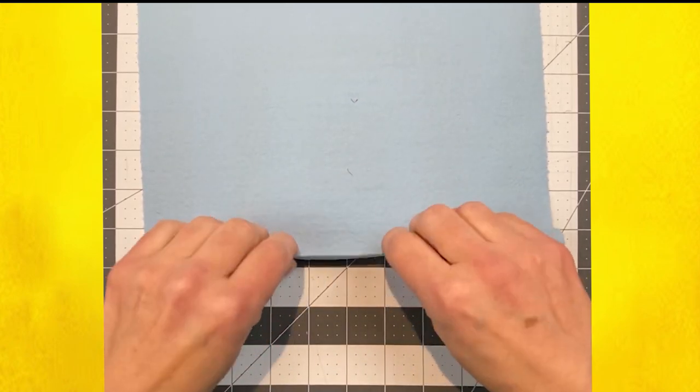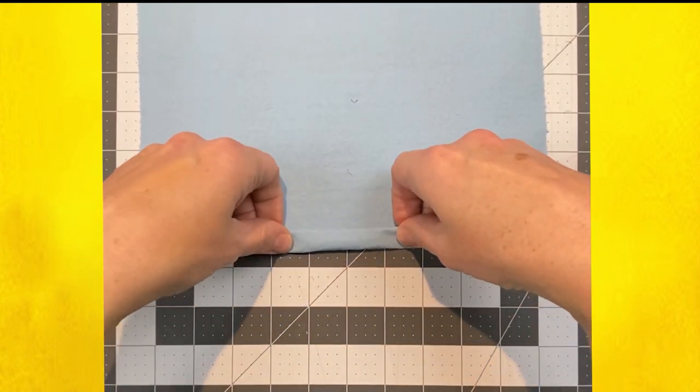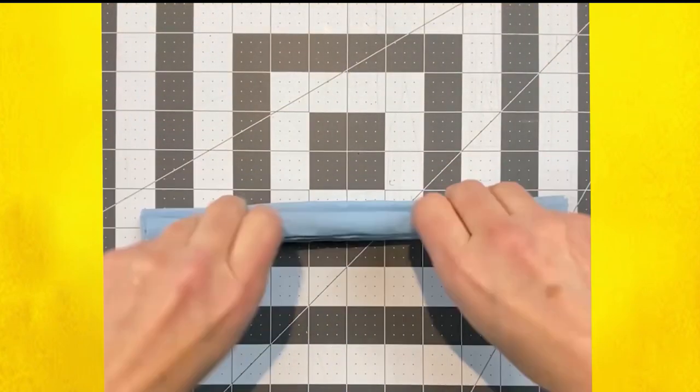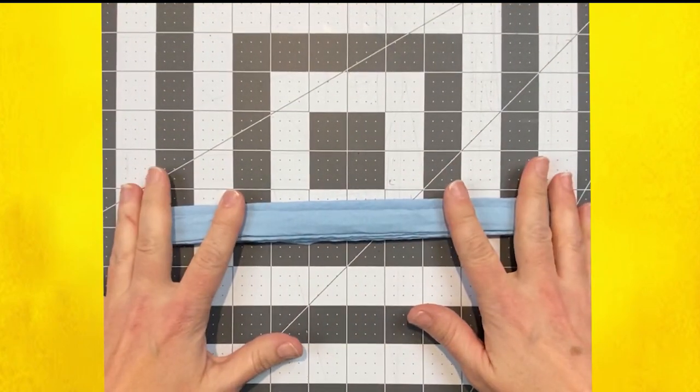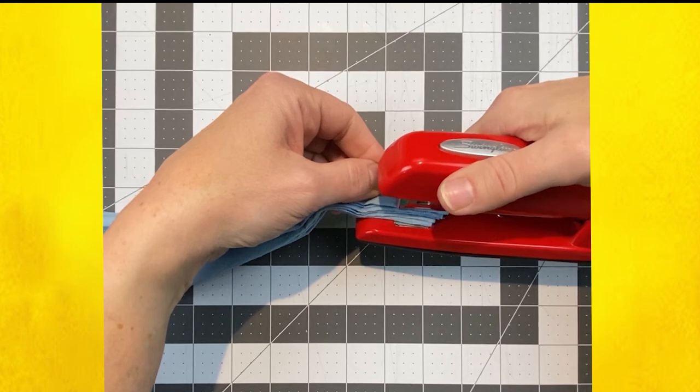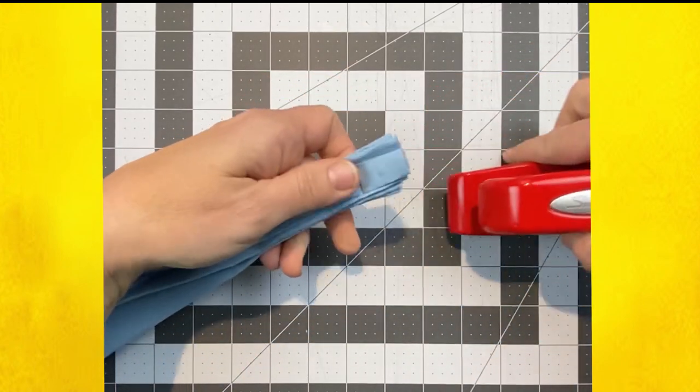Now fold it like an accordion, starting with about a three-quarters inch fold and then one inch folds to the end. Flatten it out and staple about one inch from the edge. Be sure to get all of the layers. Now do that on both sides.